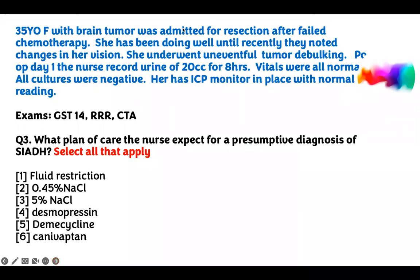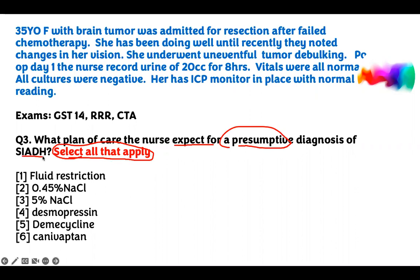Same question, but now they're giving us something different — select all that apply. I like to give you these questions so you become comfortable, broaden your scope, and think clearly. When you see this question, don't worry about it. What plan of care will the nurse expect for a presumptive diagnosis of SIADH? They've told you the diagnosis is SIADH, so what plan of care will you institute?